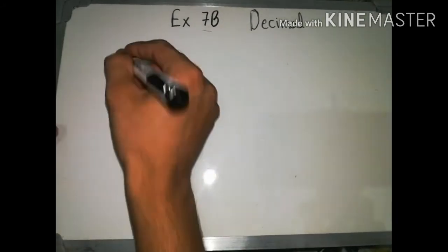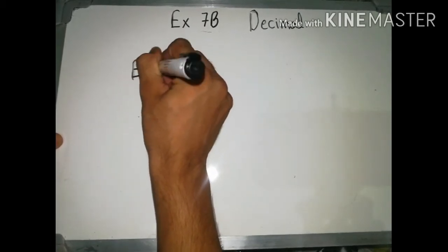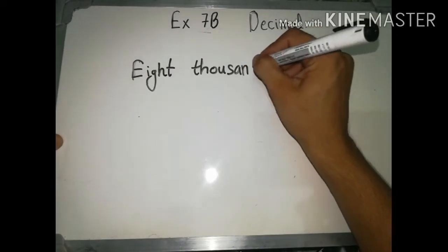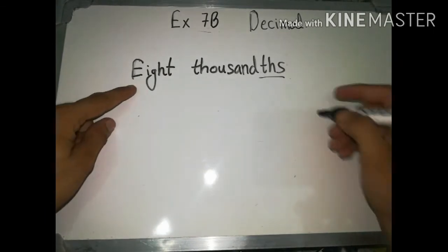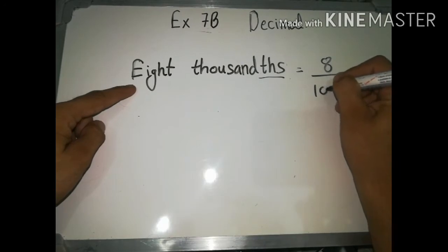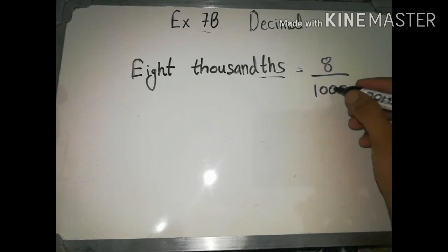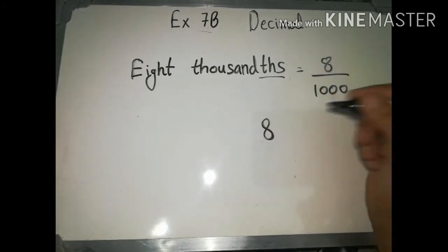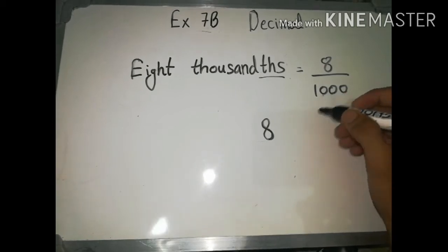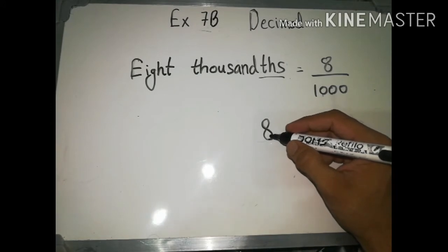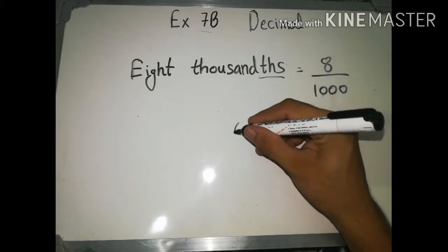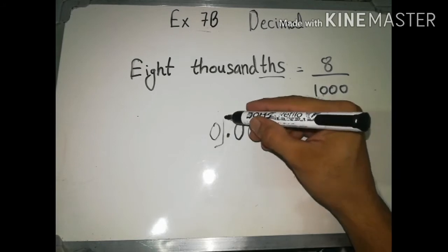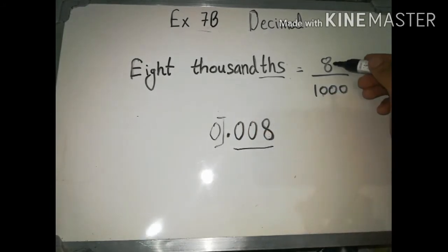Let me give you one more example before the exercise. We have eight thousandths — eight divided by one thousand. To convert this decimal fraction into a decimal number, write the numerator eight, then count the zeros: one, two, three. We put the decimal after three places from the right. There is only one digit, so we add two zeros: 0.008. The whole part is zero and eight is on the thousandth place.